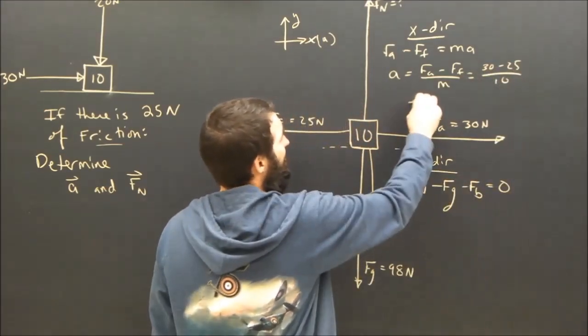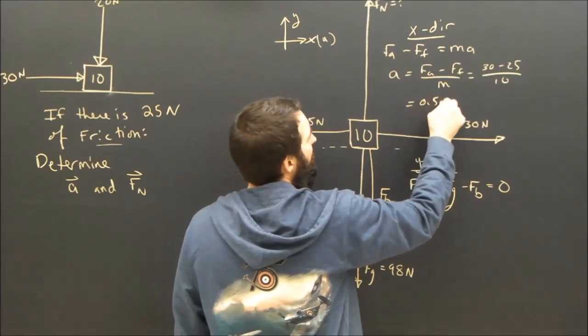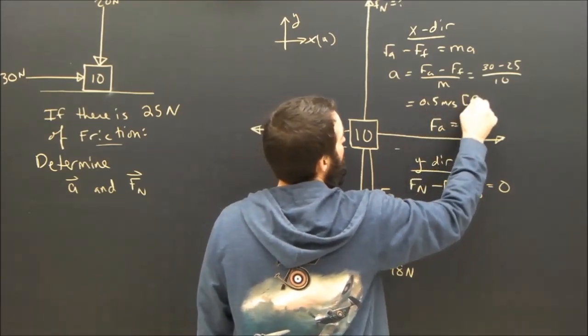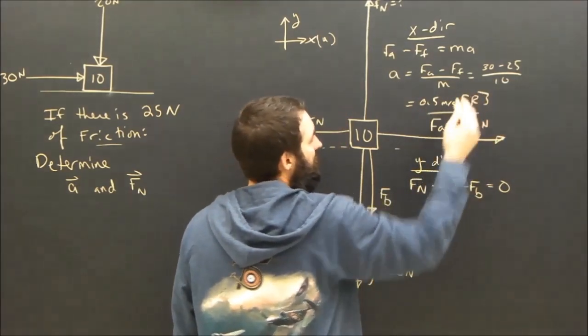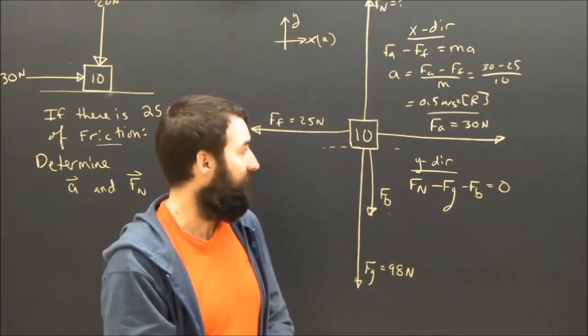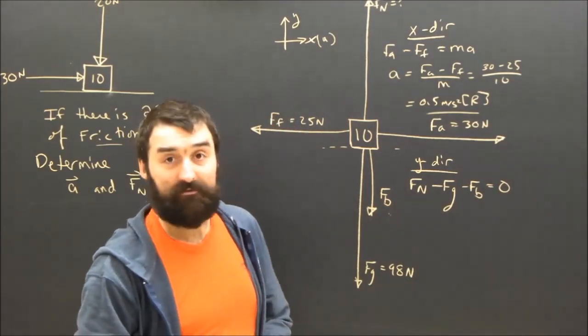I hope we can because I don't have a calculator. That's 5 over 10. 0.5 meters per second squared. And I better put a direction in there so my teacher doesn't get upset. The acceleration is 0.5 meters per second squared to the right.